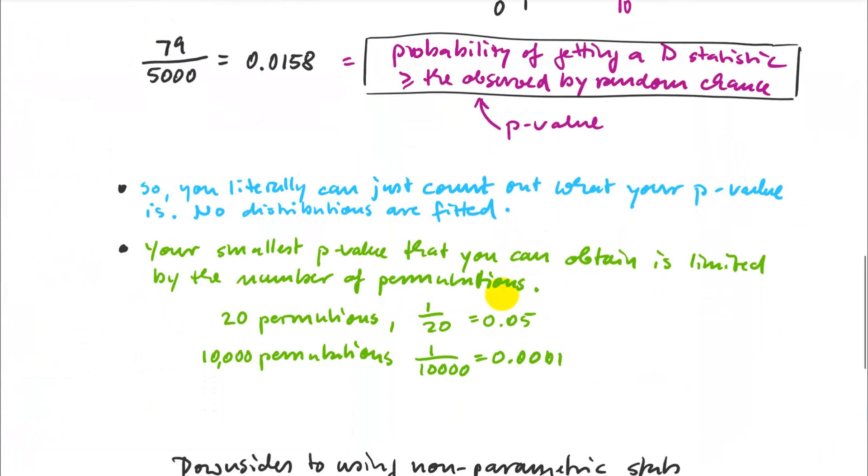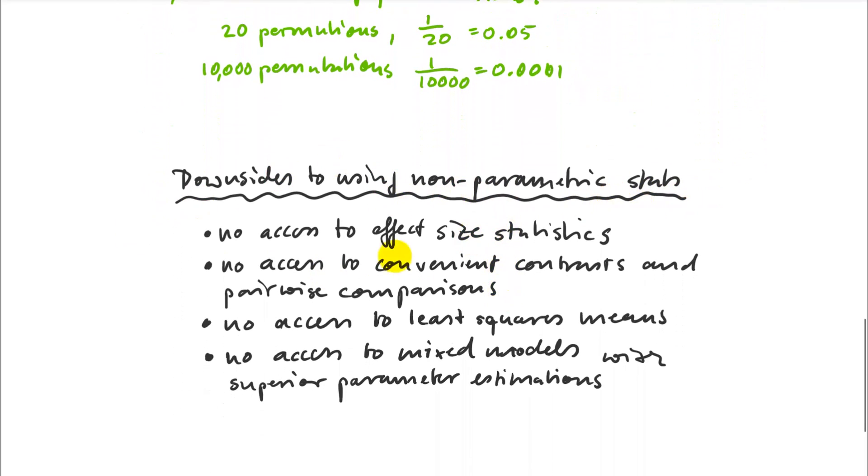And the downsides really outweigh the benefits. So there's quite a few downsides to using non-parametric statistics. First of all, you have no access to effect size statistics. You also don't have access to convenient contrasts and pairwise comparisons. So some of the functions actually work with the output of permutational ANOVA. But they use the standard error. So then you're back to violating the assumption of normality. You also have no access to the least squares means procedure, which can give you really much better estimates of your means if you have unbalanced designs or missing values. And you also have no access to mixed models. And so one of the really great benefits of mixed models is that they have very sophisticated algorithms to estimate your means and all the parameters that you care about. So for simple designs, there's no really severe downside to using non-parametric statistics. But for any complex design, I would forget them. You're much better off with the parametric statistics.